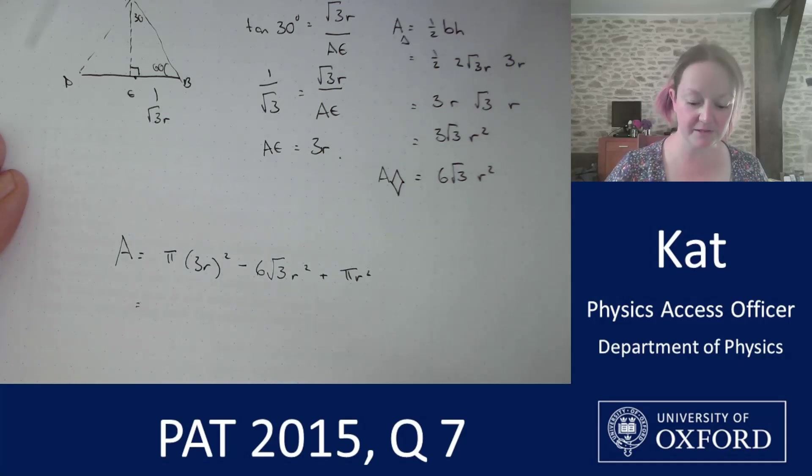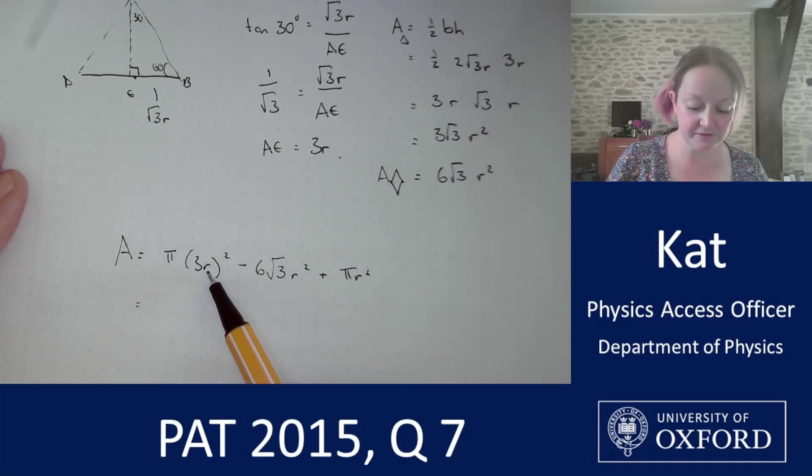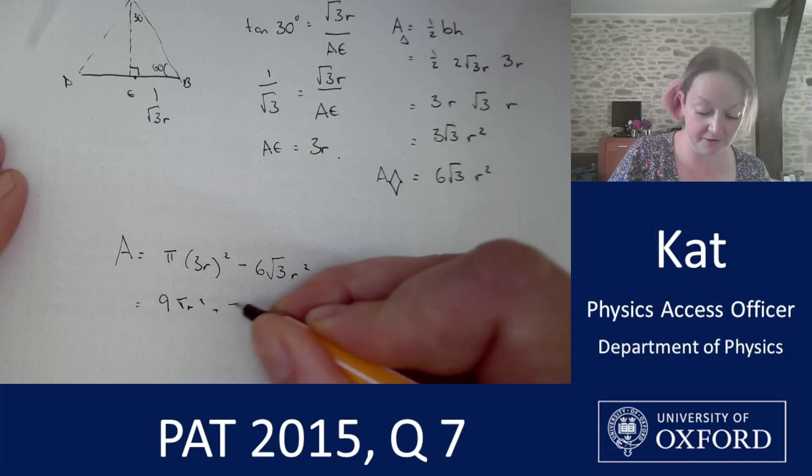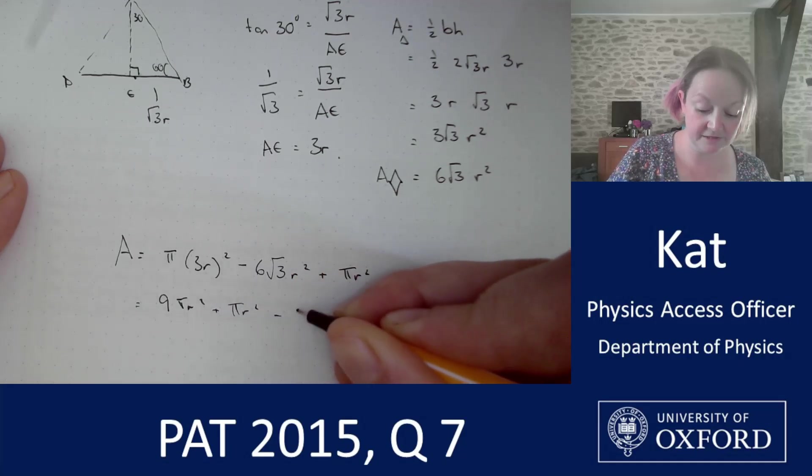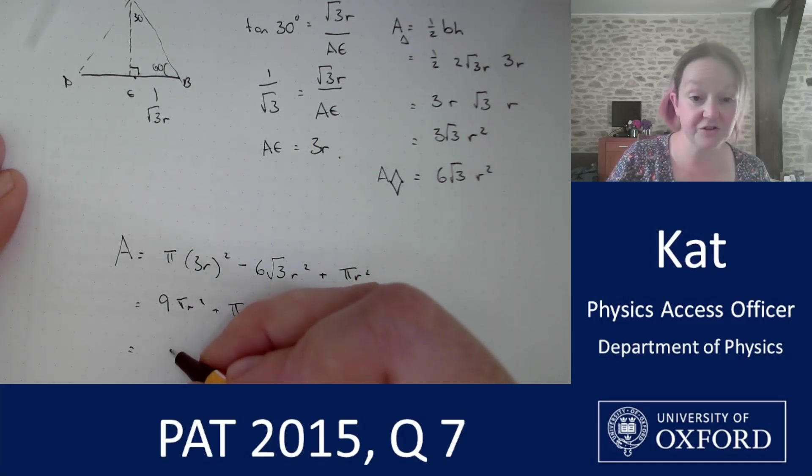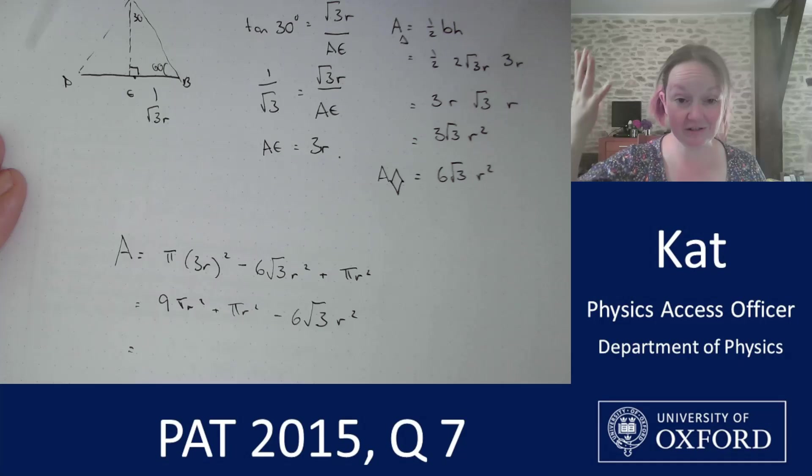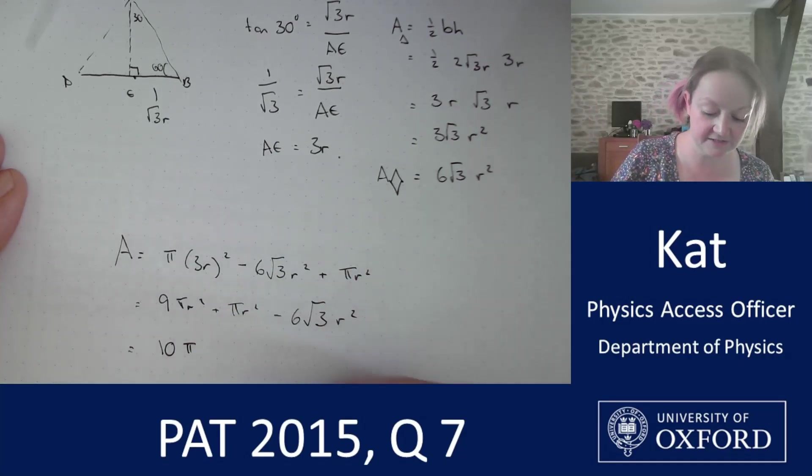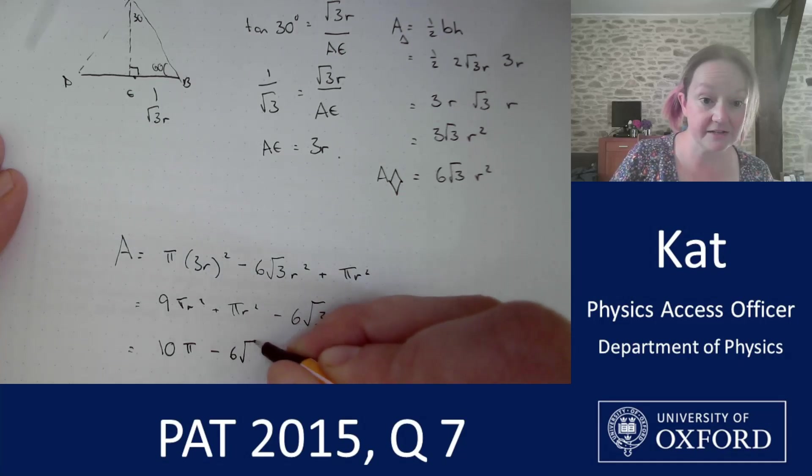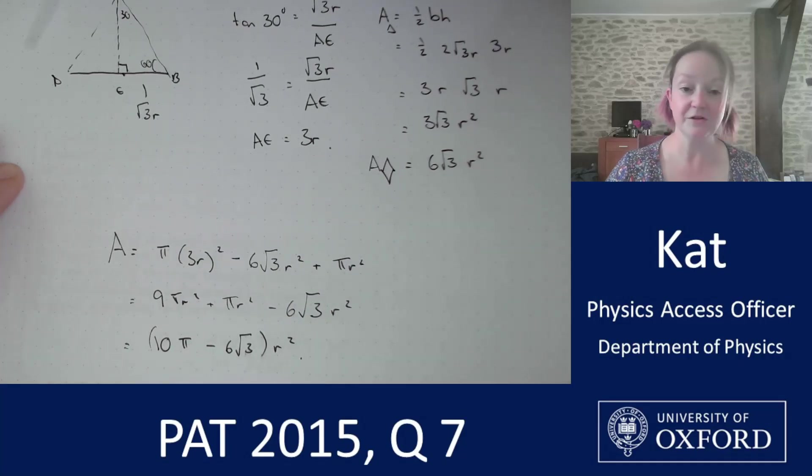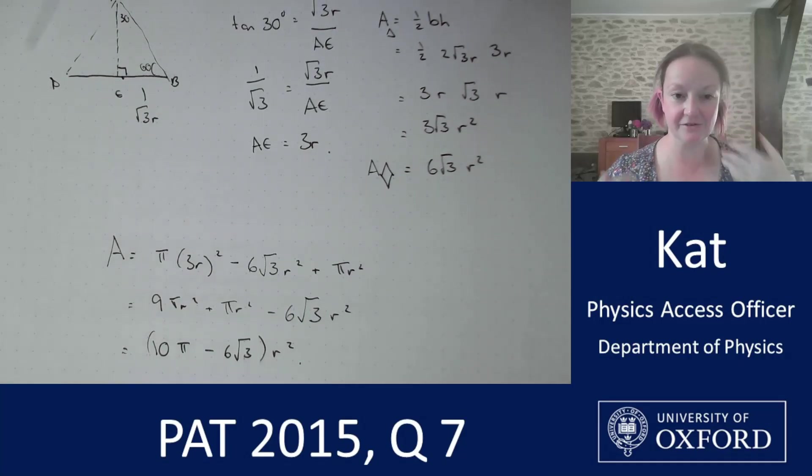But you can see that this one is going to give me 9 pi R squared. And I have another pi R squared on the end. Take away 6 root 3R squared. And you would just keep going until your answer matches the format of the multiple choice questions. So I'm going to take it to 10 pi, take away 6 root 3R squared. You would take it as far as the answer that you had to select.